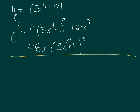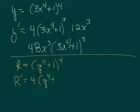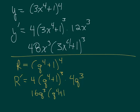Let's do another one. This is r equals q to the fourth plus 1, to the fourth power. r prime — the derivative — bring the exponent down front, subtract 1 from the exponent, times the derivative of the inside. I can multiply the 4 to get 16q to the third, times q to the fourth plus 1, all to the third power.